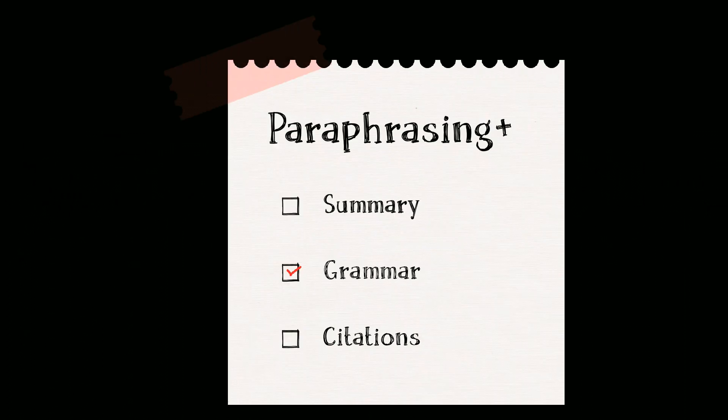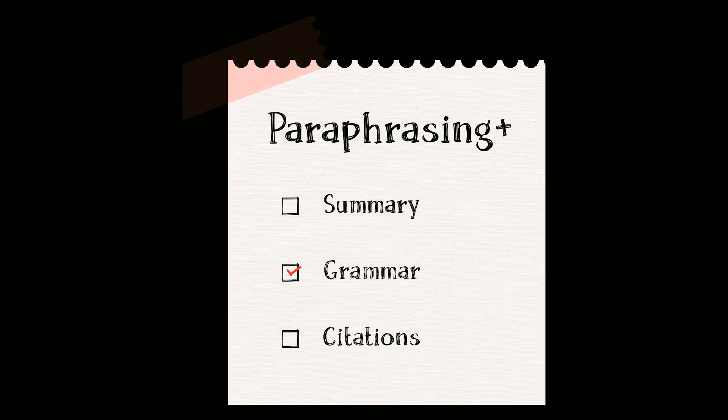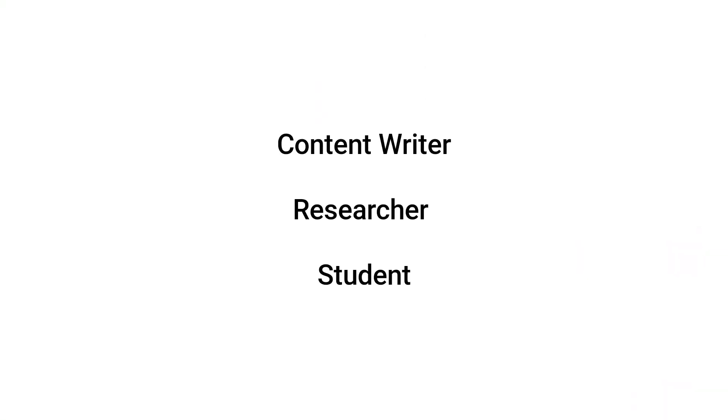Welcome to a tutorial on paraphrasing software called Quillbot. Paraphrasing tools are useful for those who are having trouble coming up with new methods to convey a concept that has already been presented. But Quillbot does more than paraphrasing — it also simultaneously functions as a summary generator, grammar checker, and citations generator. So, if you are a content writer, researcher, or student, Quillbot is a useful tool for you and so is this short tutorial.